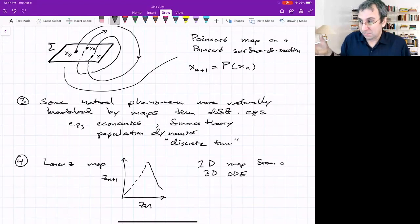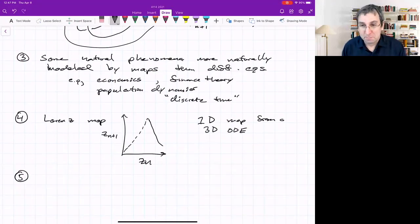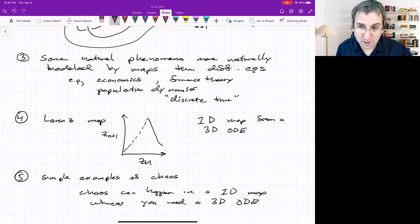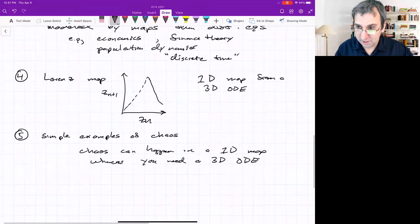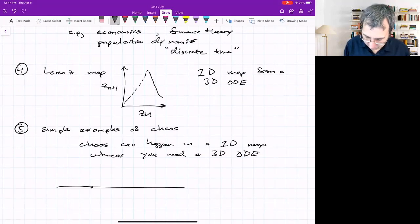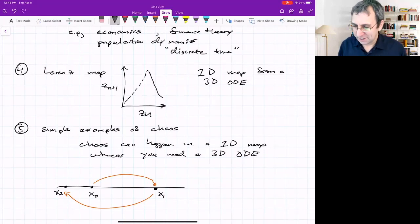It's not quite a Poincaré section, it's something else that just ended up being useful. Mathematically, they provide simple examples of chaos, because you can get chaos in a 1D map, whereas you need a 3D ordinary differential equation. And we're going to start with a map that does show chaos. The thing that's weird about maps is things are kind of hopping. They don't have to move continuously.